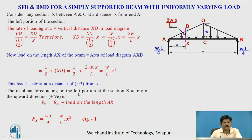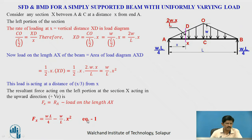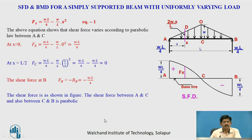The resultant force acting on the left portion of the section acting upward is treated as positive. So the shear force at this section Fx equals Ra minus load on length AX. Fx equals WL by 4 minus W by L into x square. That is equation number 1. This equation shows that the shear force varies according to the parabolic law between A and C, because there is an x square term.